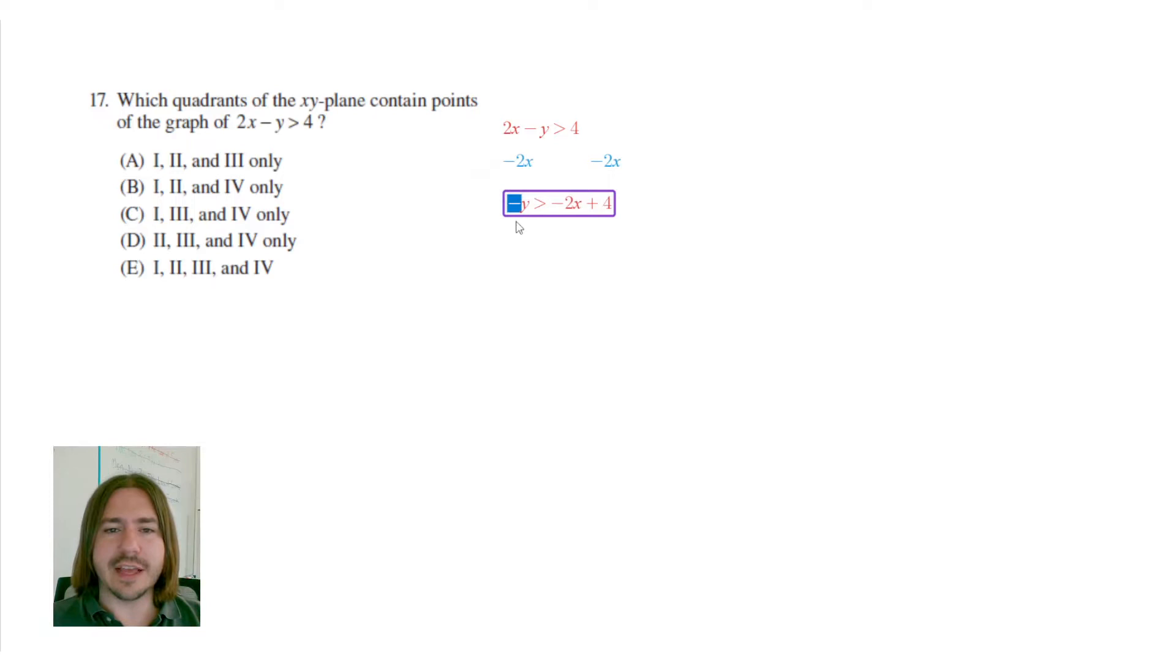I do need to get rid of this negative, though. So to do that, I'm going to divide both sides by negative 1. And one thing to note here is that whenever you multiply or divide both sides of an inequality by a negative, you have to flip the inequality symbol. So this greater than is going to turn into a less than when I divide by negative 1. So my inequality written in slope-intercept form will be y is less than 2x minus 4.